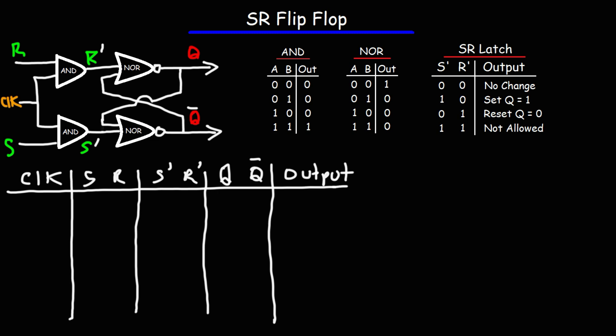First we need to define the output states Q and Q bar. I like to hit the reset button to reset the circuit back to its original condition, in which case Q is going to be 0 and Q bar is going to be 1.